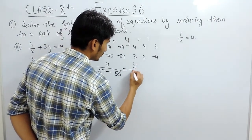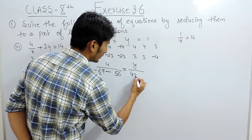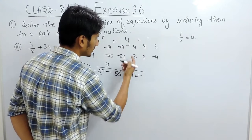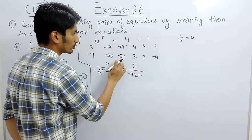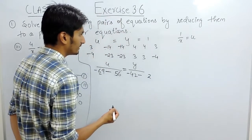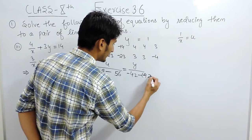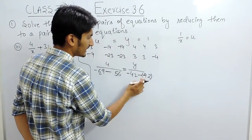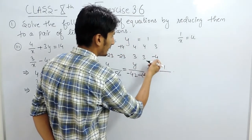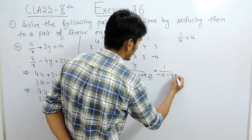Similarly, for y, you have to cross multiply it. So 14 into 3 is 42 with a negative sign, and you subtract the other value which is 23 into 4. So 23 into 4 is 92, with a negative sign because 23 is carrying a negative sign. And for the constant term, again you have to multiply it: 4 into 4 is 16, and 3 into 3 is 9.